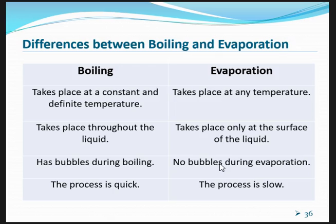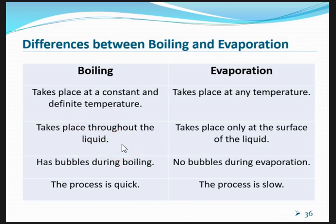Let's look at the differences between boiling and evaporation. Boiling occurs at a definite temperature that remains constant during the process, whereas evaporation takes place at any temperature above the melting point. Boiling takes place throughout the liquid — bubbles form at all parts, including the bottom, sides, and near the top — while evaporation only occurs at the surface of the liquid. During boiling, many bubbles are visible, but during evaporation, no bubbles are present. Boiling is a very quick process, while evaporation is much slower.